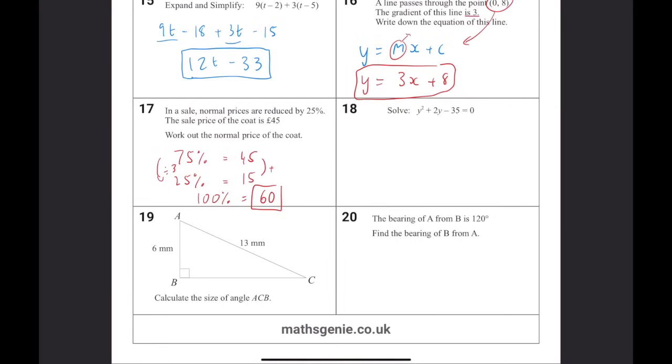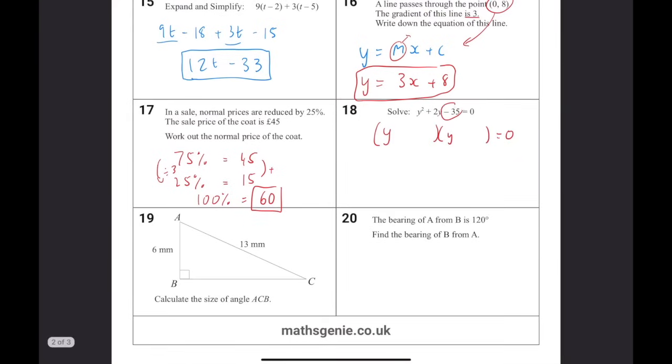Solve a quadratic equation. So first of all, we want to factorize. Put Y at the front. Two numbers that multiply together to make minus 35 and add together to make 2. 5 and 7 multiply to make 35. And if we make the 5 negative, that will add to make minus 2, because we need a negative to make minus 35. So from there, Y must be 5 and Y must be minus 7. That is our two solutions.